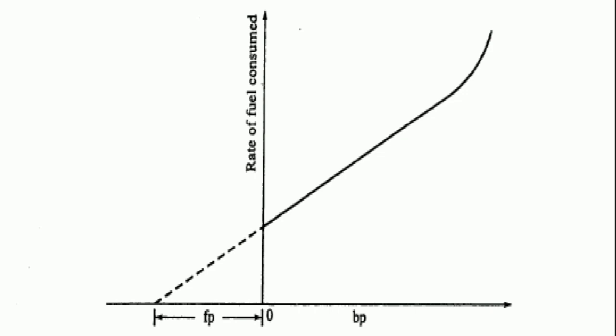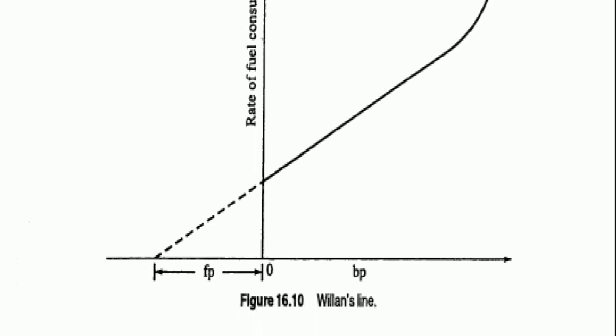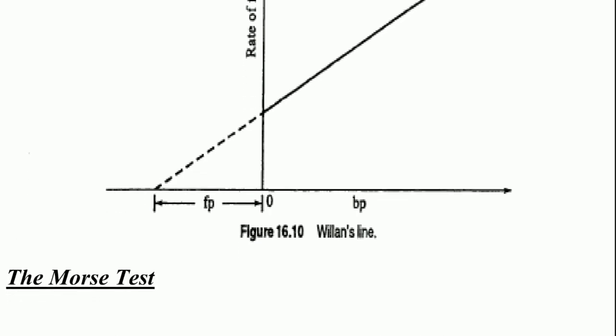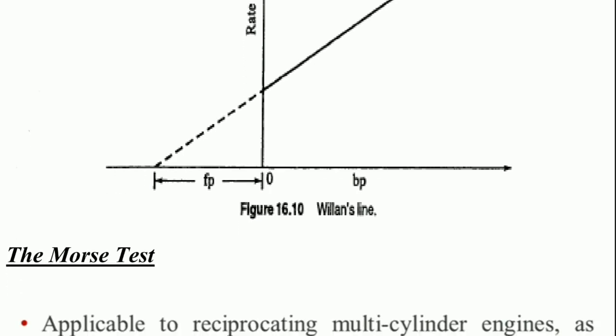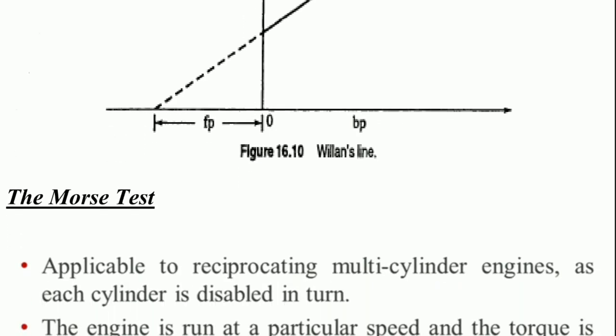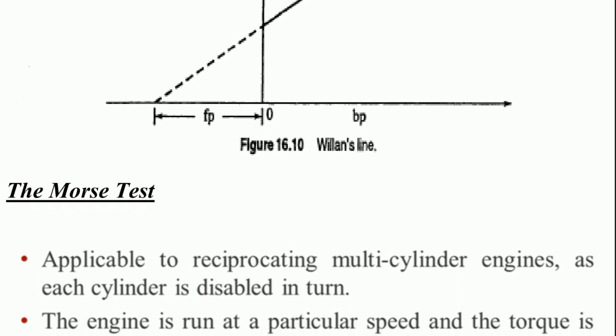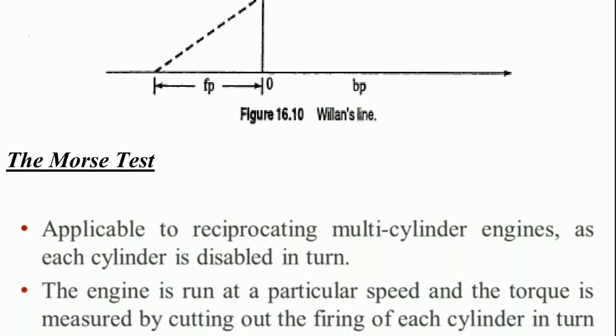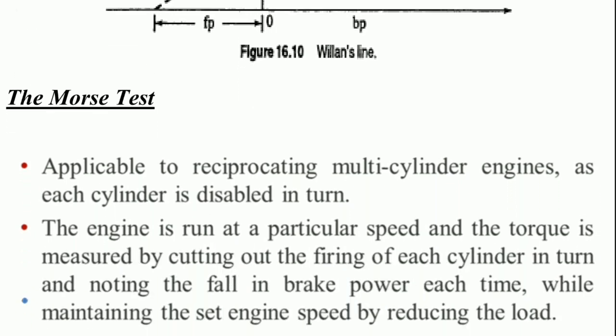There is a figure where the Y-axis shows the rate of fuel consumed and the X-axis shows BP or FP. This is the figure of the Williams Line.